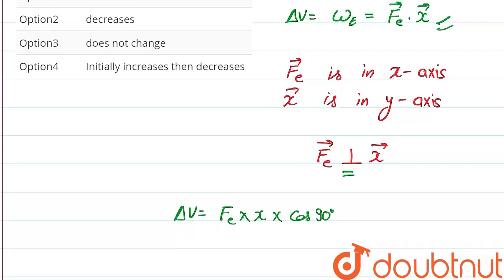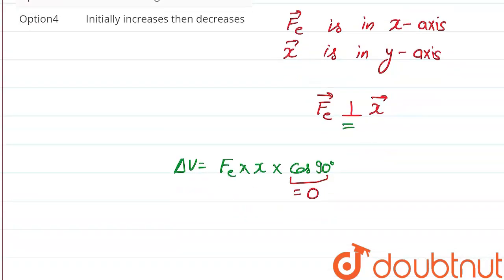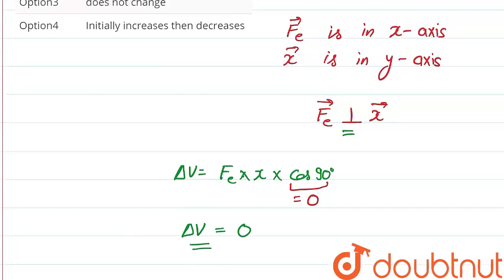So that means this whole value, del V, is equal to zero. That means the change in potential energy is zero, and what does that mean? That the potential energy is going to remain the same.